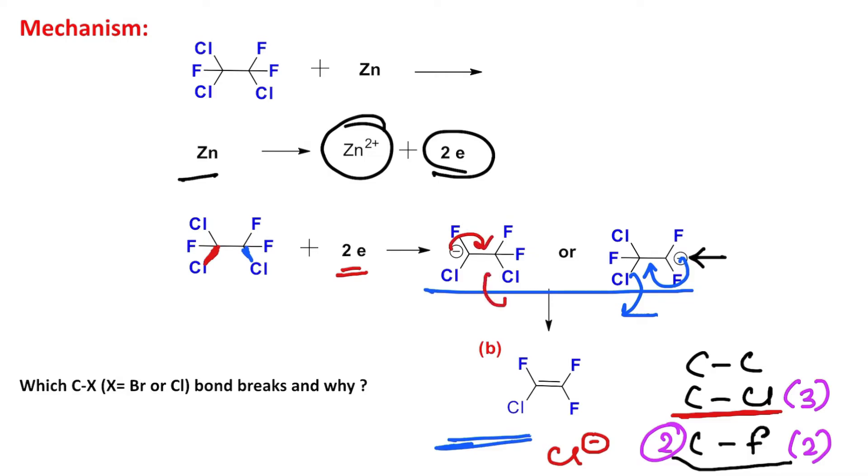Now a simple question comes to mind: let's consider this is A or this is B—which will be produced more? You can consider this by stability of the corresponding carboanion.